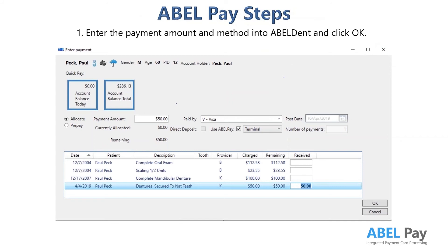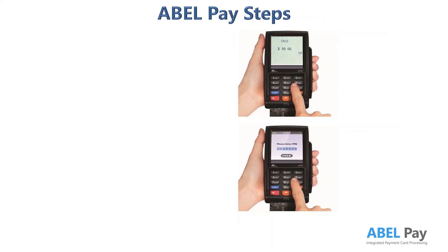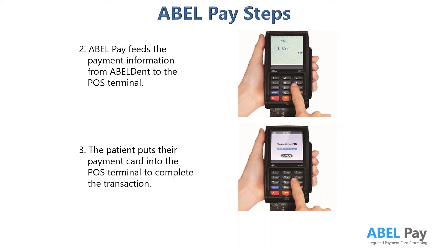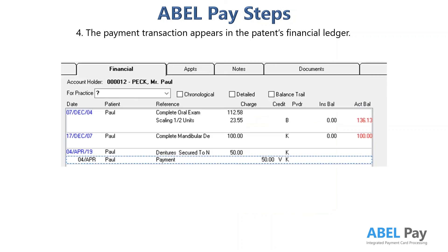The way AblePay works is simple. Enter the patient's payment amount and method into AbleDent as usual. In this case, we have entered in a payment of $50 by Visa. AblePay then feeds the payment information from AbleDent to the POS terminal. The patient puts their payment card into the POS terminal to complete the transaction. The payment transaction appears in the patient's financial ledger.